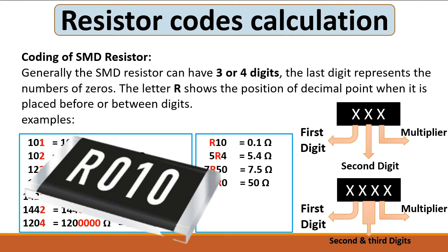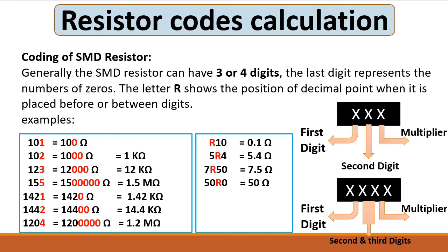Over SMD resistors you will find three or four numbers. Sometimes you will find just digits, and sometimes you will find the little R, K, or M with numbers. When you have an SMD resistor with three digits, the third digit is always the multiplier or the number of zeros.